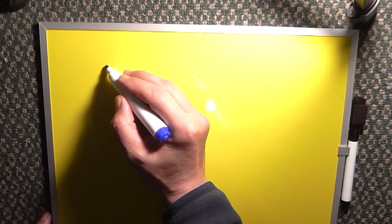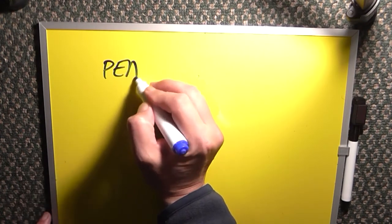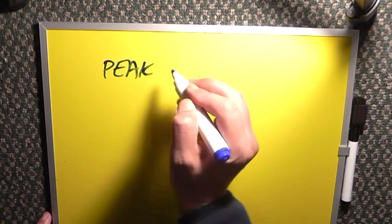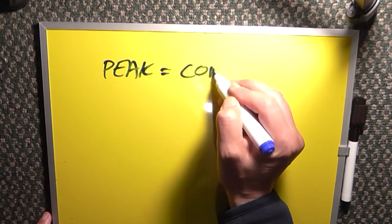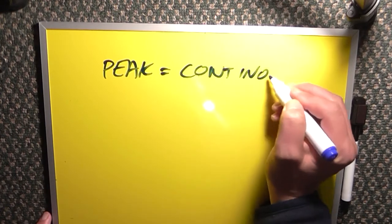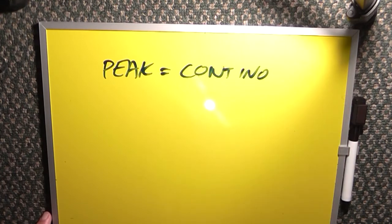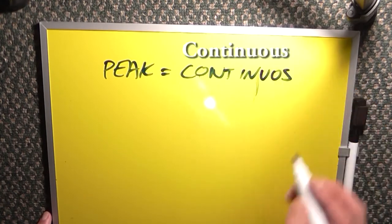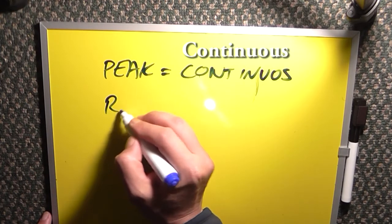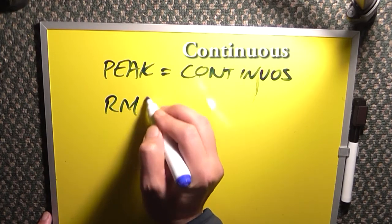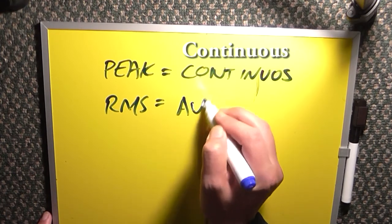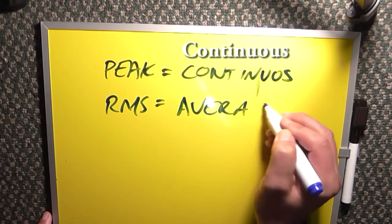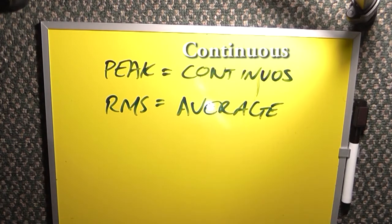When we say peak, we're saying continuous power, and when we're saying RMS power, we're saying average power.